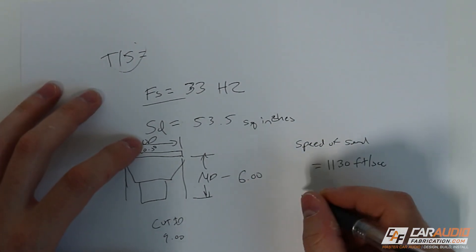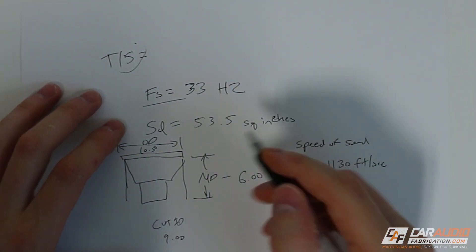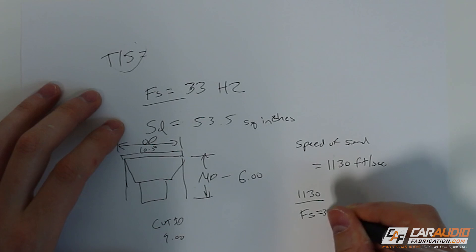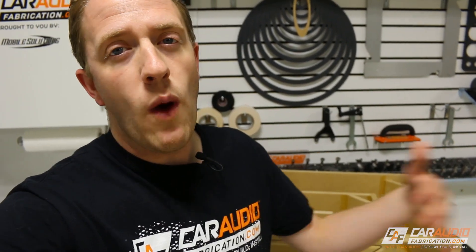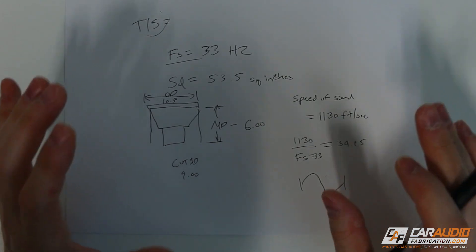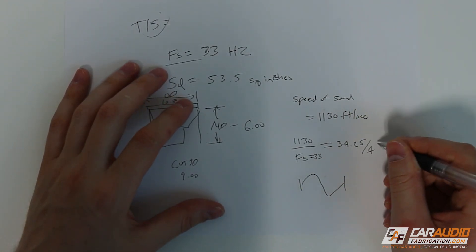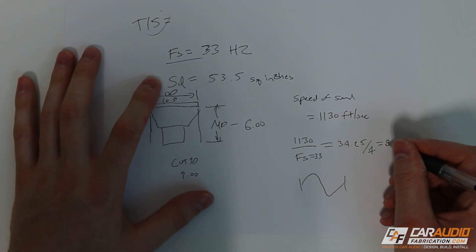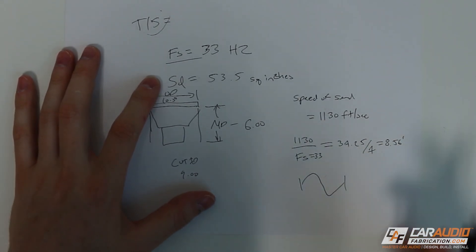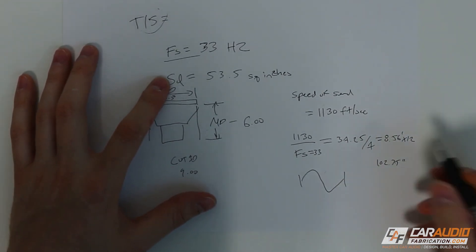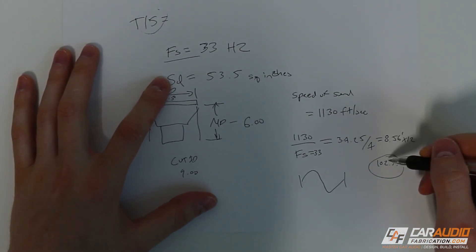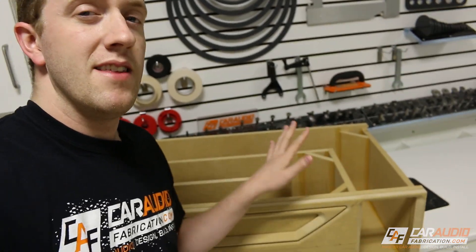Now let's go through the math. We take 1130 and divide it by the free air resonance of 33 Hz, giving us approximately 34.25. This calculation gives us the wavelength of a 33 Hz wave — 34.25 feet long. Since this design is based on quarter wave theory, we divide by four: 34.25 ÷ 4 = 8.56 feet. Converting to inches by multiplying by 12 gives us 102.75 inches. This is how long we want the port to be inside the subwoofer enclosure — that's our first key design value.